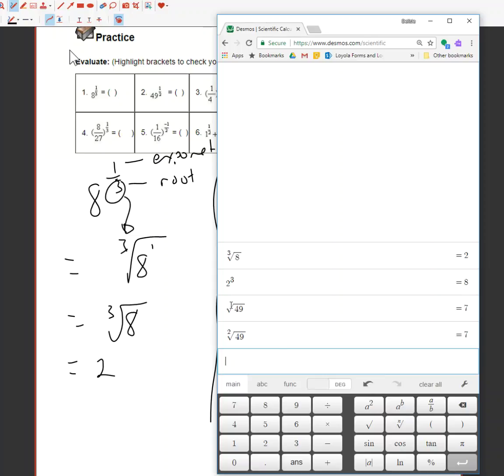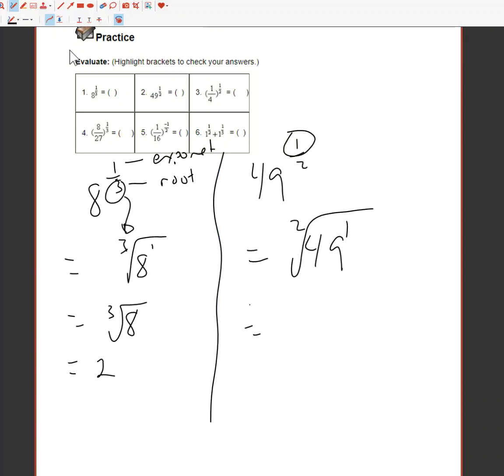Mathematicians are lazy. We're too lazy to put the 2 in here sometimes but it means the same thing. So square root or the second root is the same thing. So square root of 49 is 7 because 7 times 7 is 49.